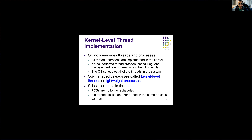The other approach is implementing threads at kernel level. Here, the operating system manages both threads and processes — all thread creation, scheduling, and management is done in the kernel. The OS schedules all threads in the system, seeing all threads across all processes. Kernel-level threads are also called lightweight processes because unlike full processes, they only carry execution state. The scheduler deals directly with threads, so if a thread of a process is blocked, another thread can be scheduled by the OS.